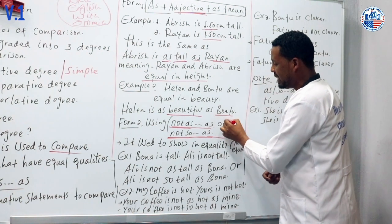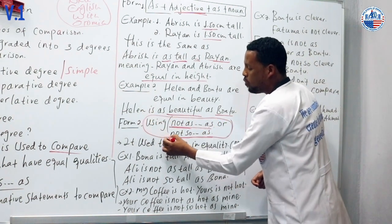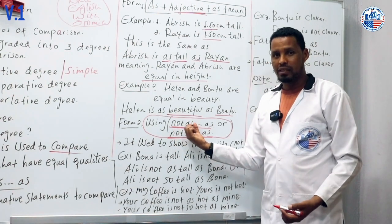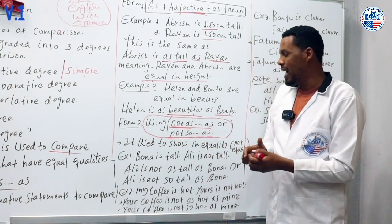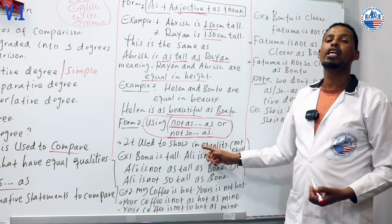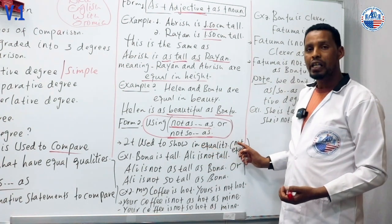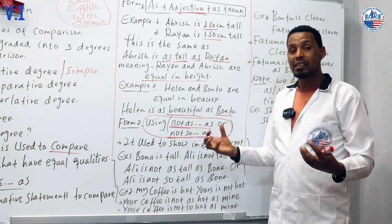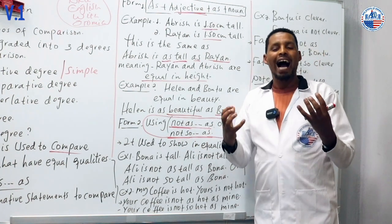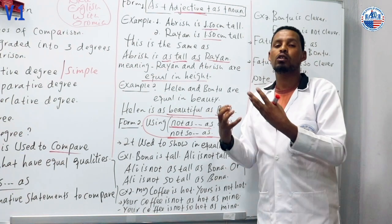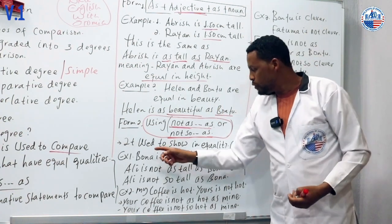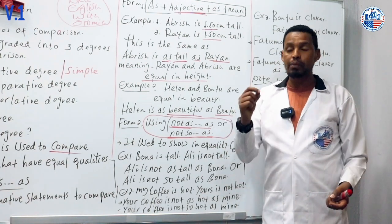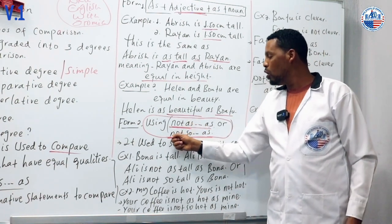It is used to show inequality or not equal. When things or people are not equal, we use 'not as...as' or 'not so...as'.